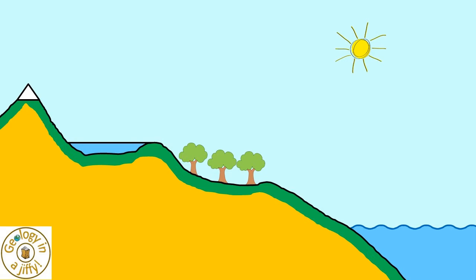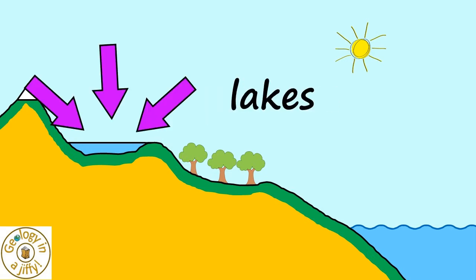The water might collect at the surface, making puddles or lakes, and eventually collect in the sea.